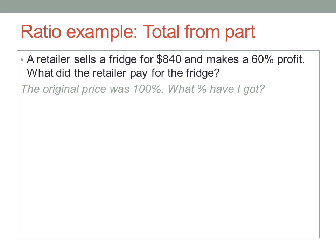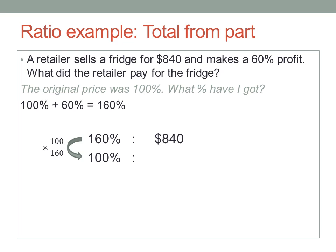$840 is not the original amount. What percentage have I got? The original was 100%, plus the 60% profit makes 160%. So I need to multiply by 100 over 160.